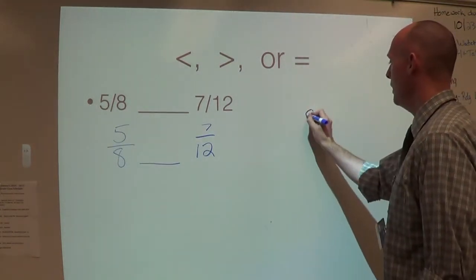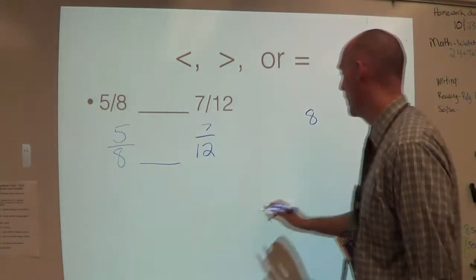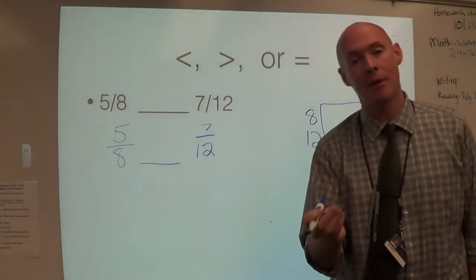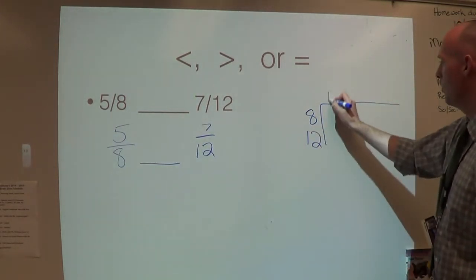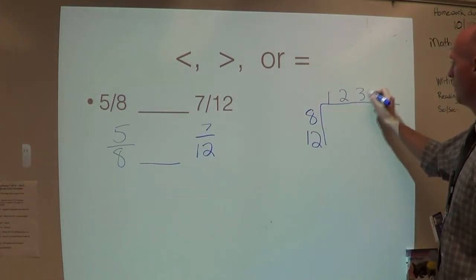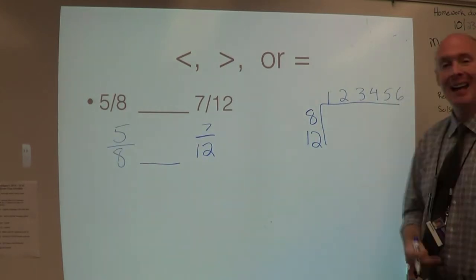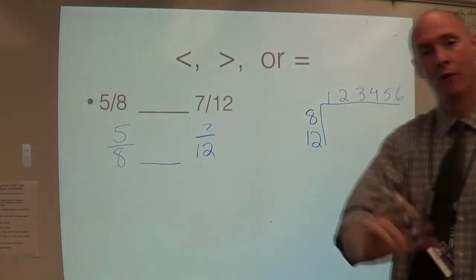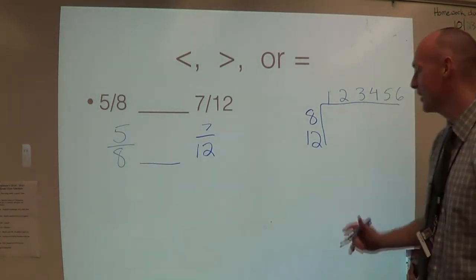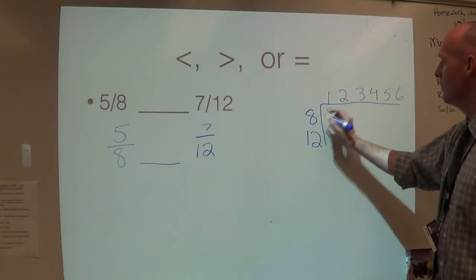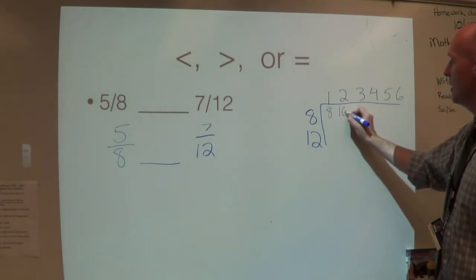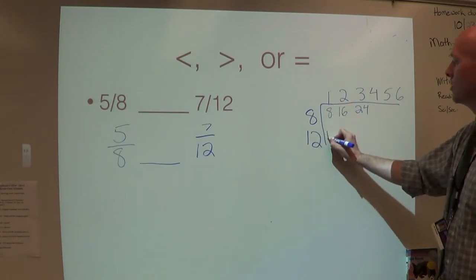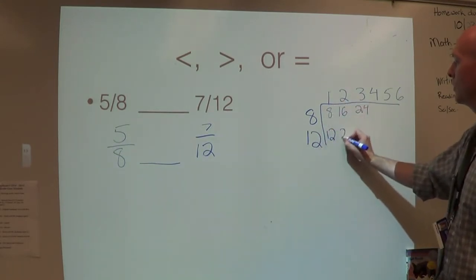We put eight, which was my first denominator, and twelve. Just like we found the least common multiple, we set up one through six. Eight times one is eight, eight times two is sixteen, eight times three is twenty-four. Twelve times one is twelve, twelve times two is twenty-four.